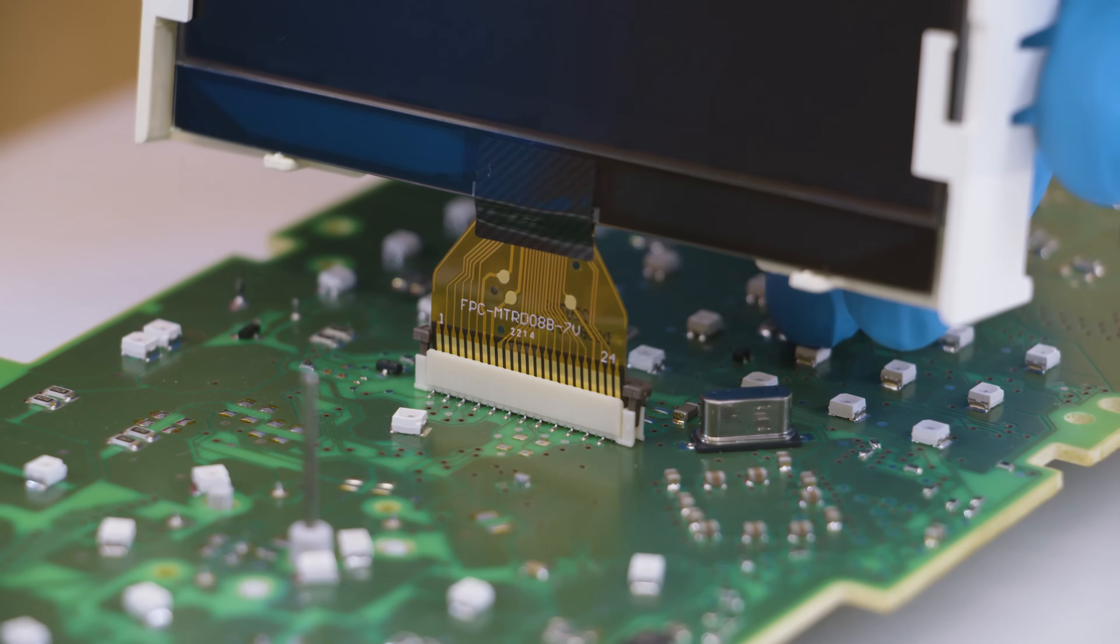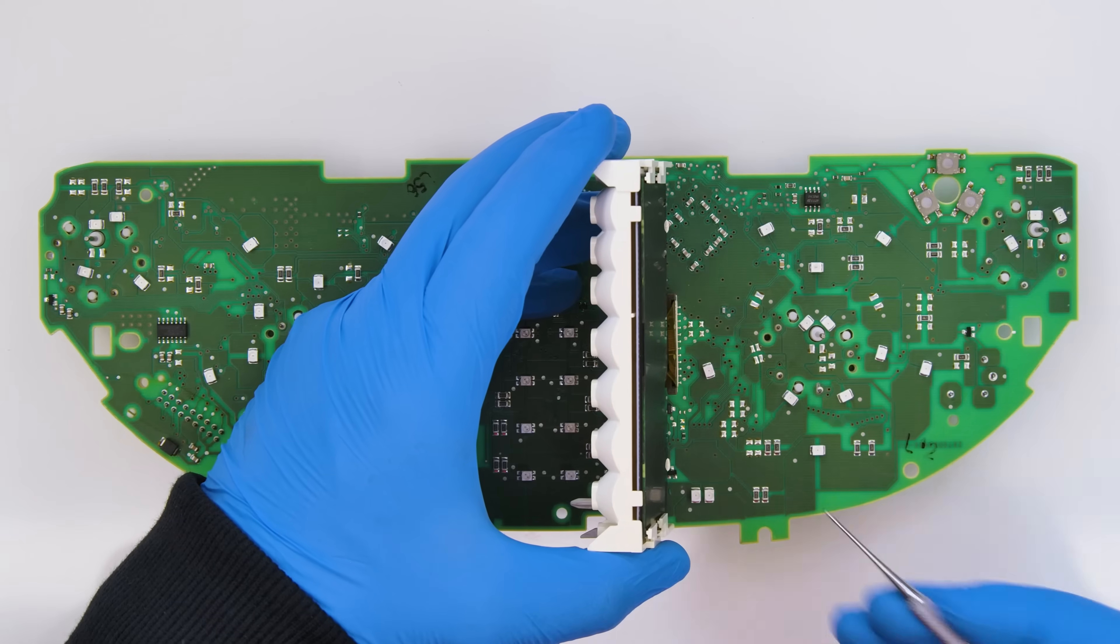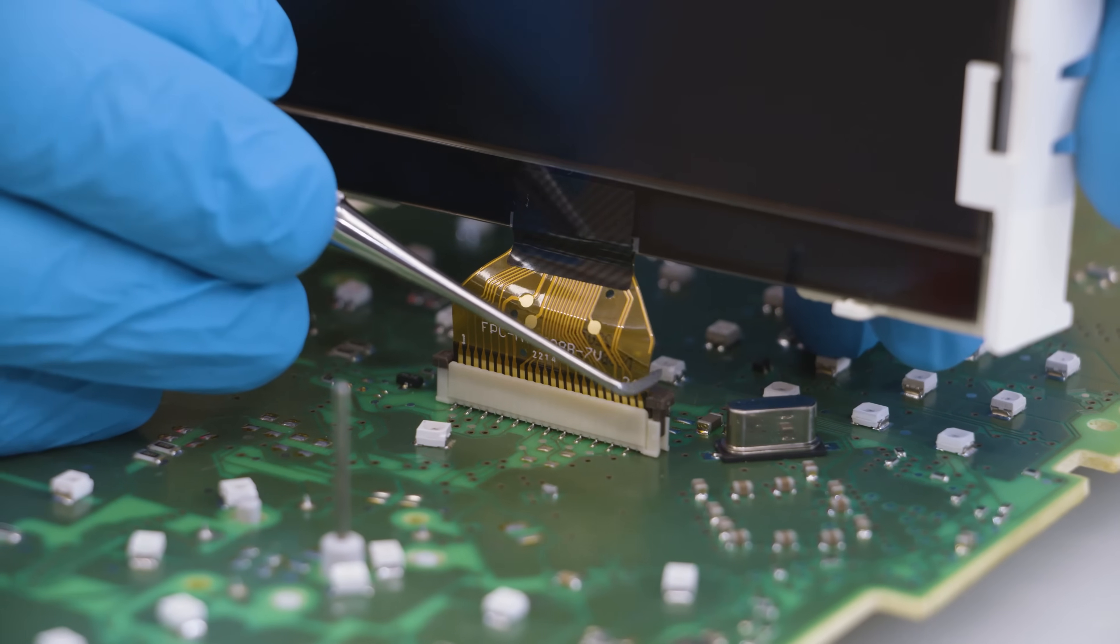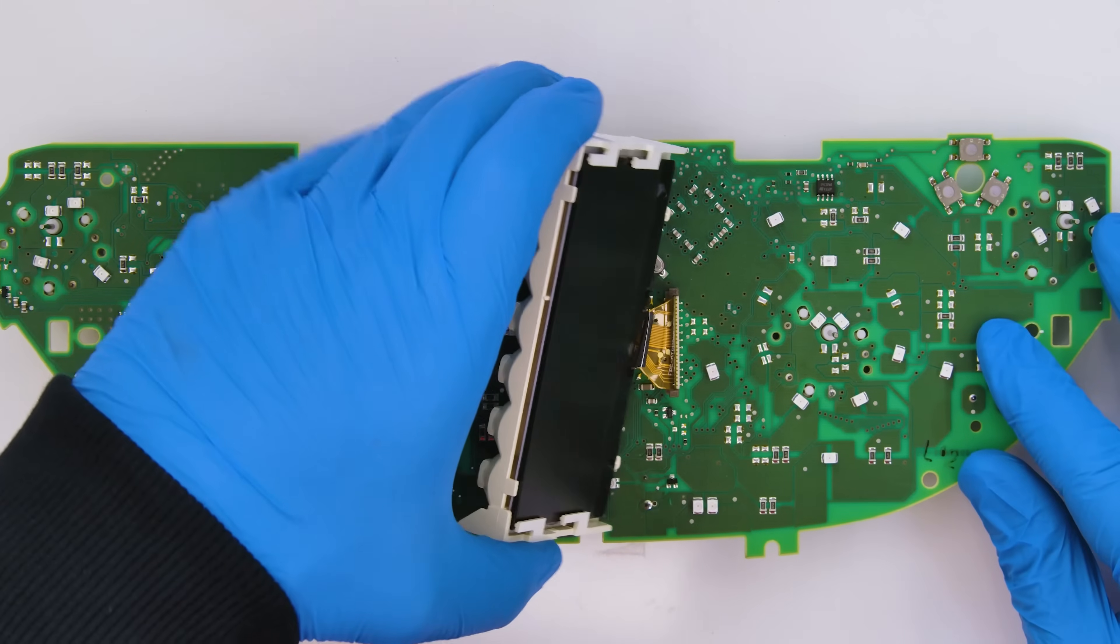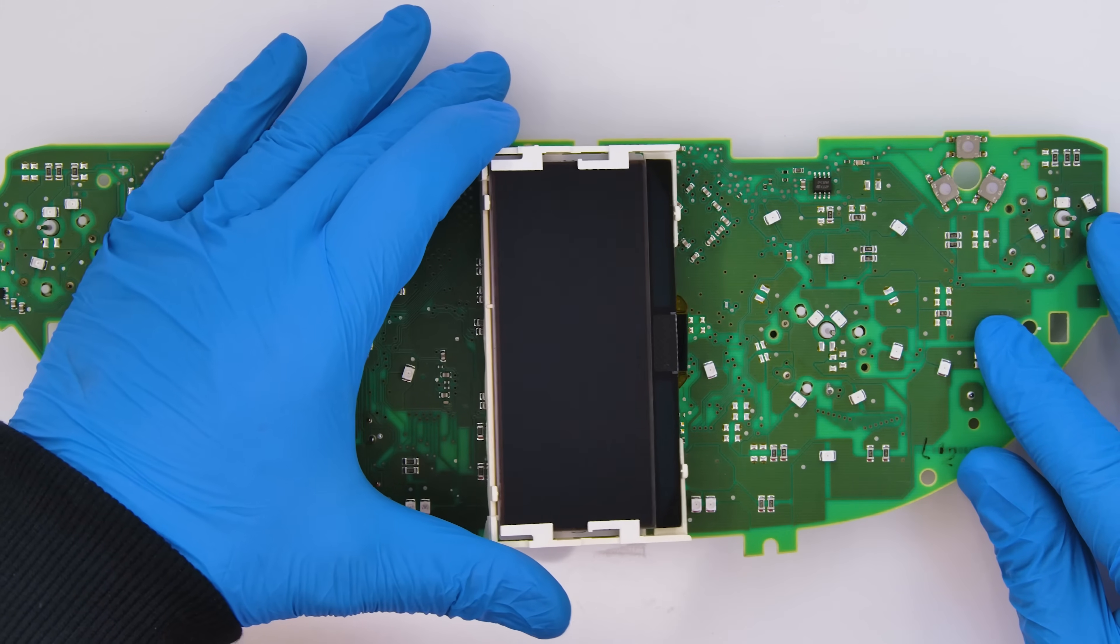Keeping the display perpendicular to the board, connect the FPC and close the connector. Then reattach the base to the PCB.